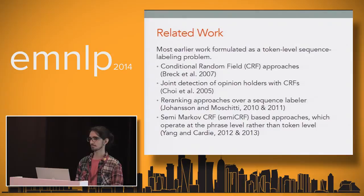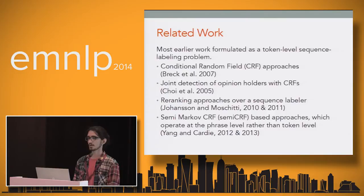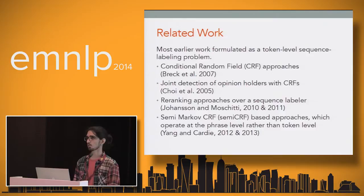Most earlier work formulated this problem as a token-level sequence labeling or tagging problem. With this idea, conditional random fields have been applied to these tasks. There are other approaches that try to jointly detect the opinion holder along with the opinion expressions, re-ranking approaches that try to improve a single sequence labeler, and more recently semi-Markov conditional random fields which operate at the phrase level and incorporate phrase-level features.